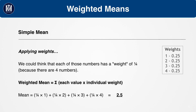When we work out simple means, we're assuming that each number has an equal weighting. For example, 1, 2, 3, and 4 each have a weighting of 0.25, or 25%, or one quarter. Now let's plug this into the weighted means formula — multiply 1 by its weight, 2 by its weight, and so on. Obviously, this is a long-winded method for simple means, so we would never do this for simple means. It is just to show you how the weighted means formula works.